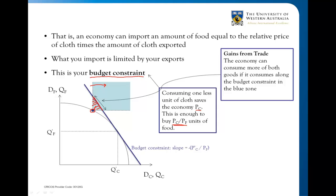We can buy simply more food if we go straight up to the budget constraint line, but that's the most we can do — we can't afford more than that based on our exports of cloth. We can be anywhere on or inside the budget constraint, but not beyond it. The gains from trade above and beyond what we could do before are bounded by this expanded area. The same principle applies wherever the closed-economy point happens to be — we can always expand consumption possibilities in this direction.